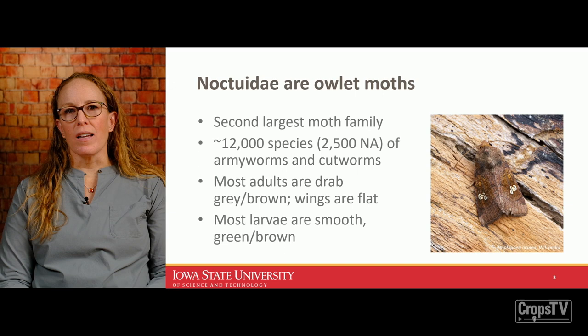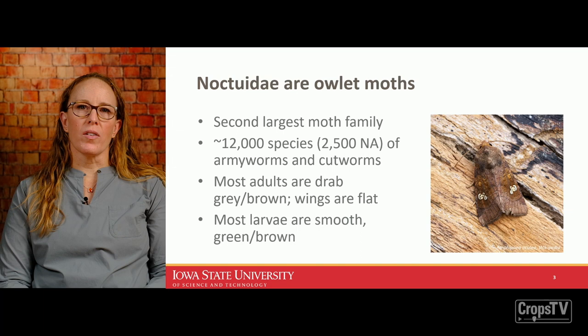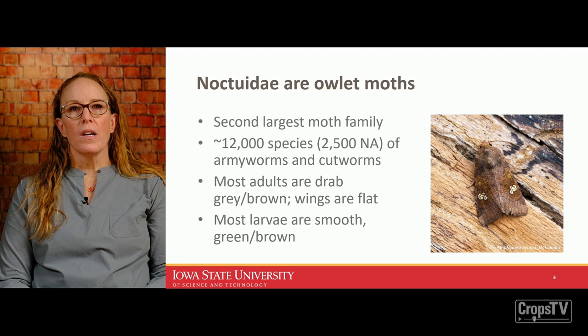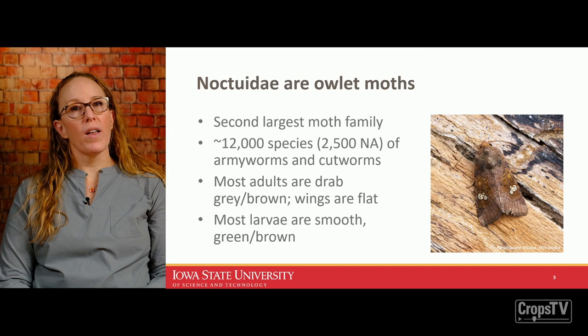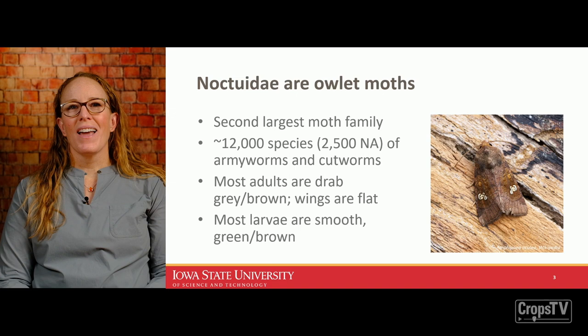Armyworms and cutworms belong in a caterpillar family known as Noctuidae, sometimes called owlet moths. This family is the second largest moth family with over 12,000 species in the world, about 2,500 in North America alone. Most are drab gray or brown moths with wings held flat over the body — fairly stout and hairy bodies compared to other moths.